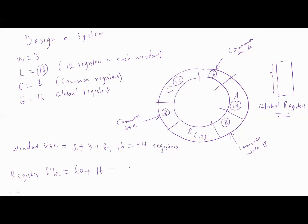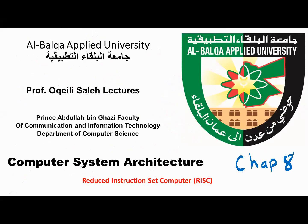And the total register file equals 12 plus 8, 20 multiplied by 3, 60 plus 16 global which is 76 registers. And you can compute these values using the formulas and compare the results.